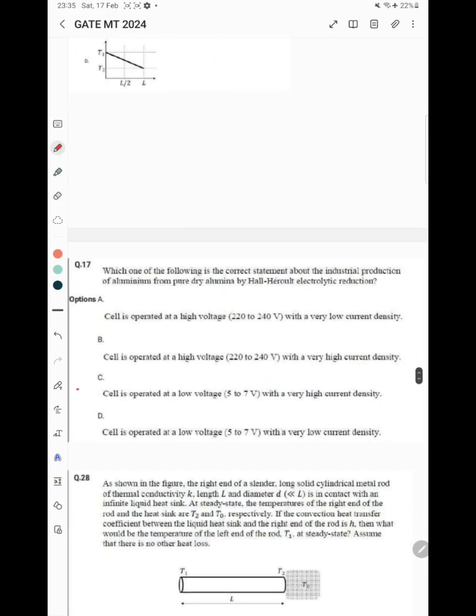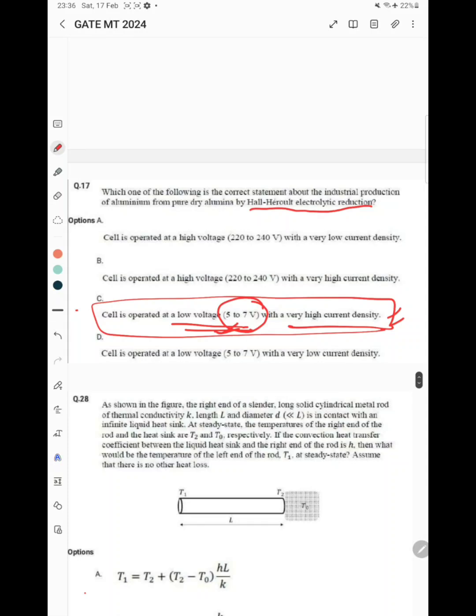The next question is which one of the following is correct statement about industrial production of aluminum from pure dry alumina by Hall-Heroult electrolytic reduction. Usually the cell is operated at low voltage, 5 to 7 volts, with high current density. This option is the correct one. If you have any doubt or want to argue that this option is not correct, you can write in the comment section and we can discuss it again.